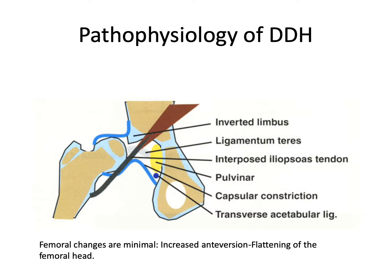This slide again reviews the altered anatomy resulting in difficulty of reduction of the hip. Shortened tendons of the adductor longus and the iliopsoas muscles can also prevent reduction. The femoral head, being outside its normal acetabular socket, often has an altered shape as well.